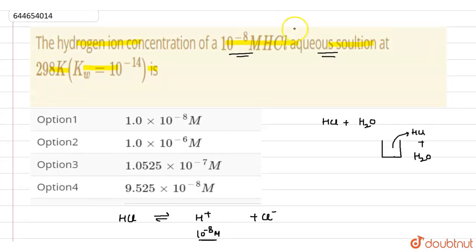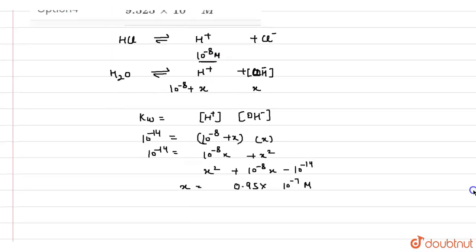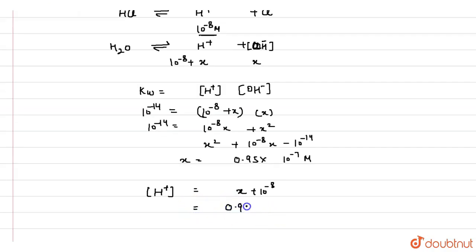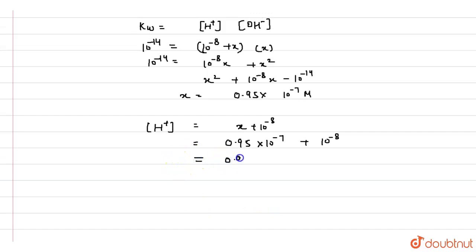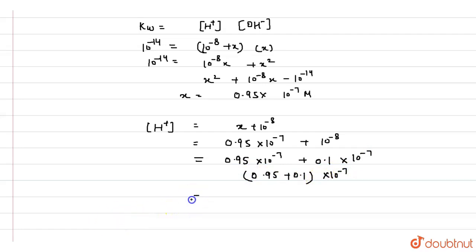Now we find the hydrogen ion concentration, which equals x plus 10 raised to power minus 8. Substituting x = 0.95 × 10⁻⁷, we get 0.95 × 10⁻⁷ plus 0.1 × 10⁻⁷, taking 10⁻⁷ as the common factor and adding the coefficients.